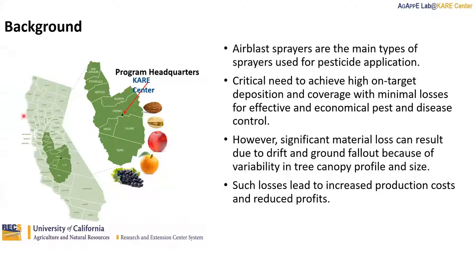The San Joaquin Valley area of California, where my program is headquartered, is a major production region for almond, pistachio, stone fruit, citrus, and grapes, and also where air blast sprayers are the main type of sprayers used to apply pesticides. For effective and economical pest control, it is critical to achieve high on-target deposition and coverage. But this can be very challenging and costly due to variability in tree characteristics, sometimes within the same orchard.